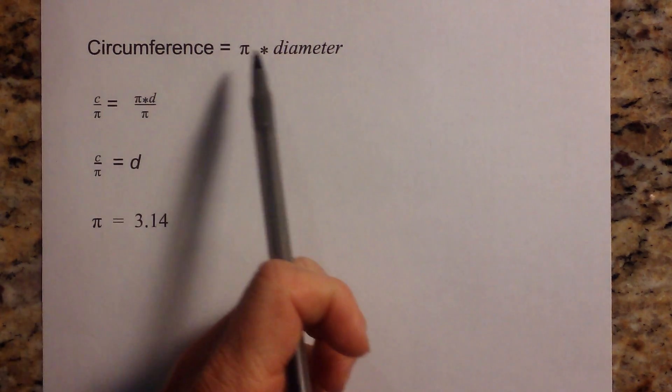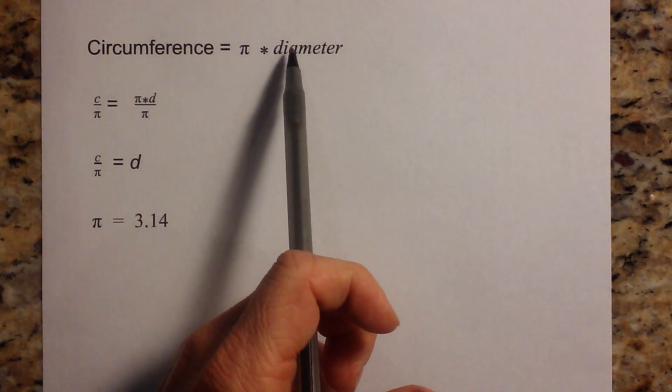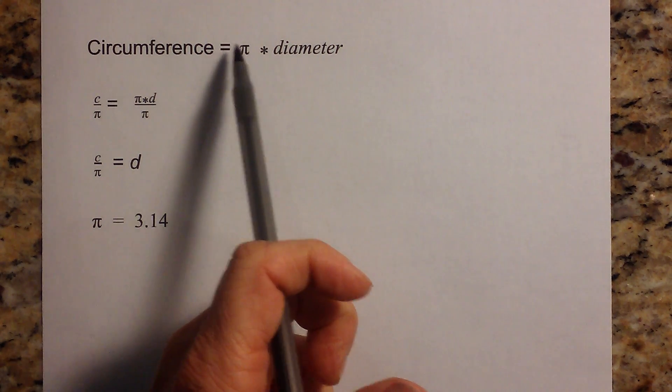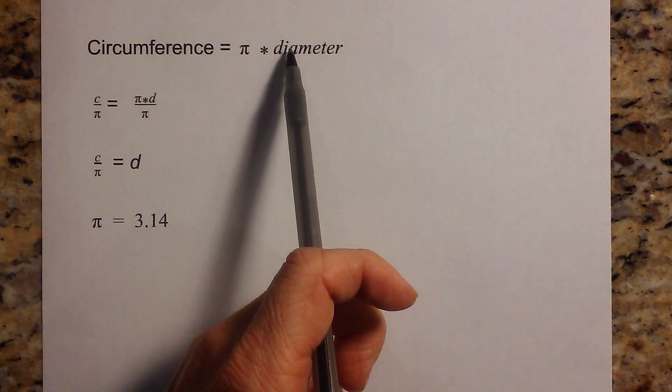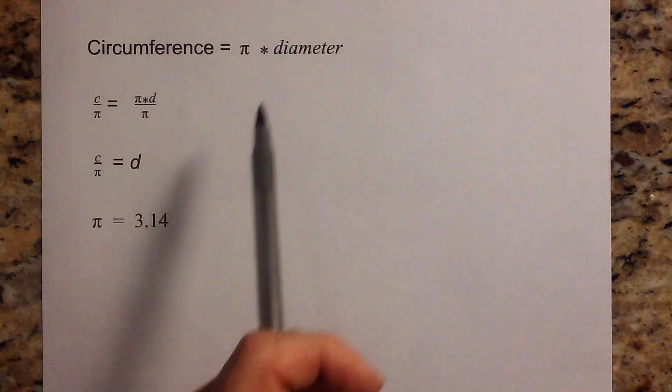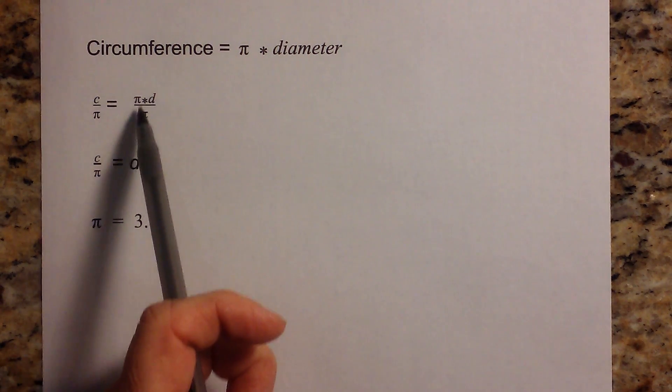Okay, if you're given the diameter to find the circumference, you just multiply the diameter times pi. However, if you have circumference and you want diameter, you have to get diameter by itself. So what we will do is, in order to get rid of the pi, we will divide both sides by pi.